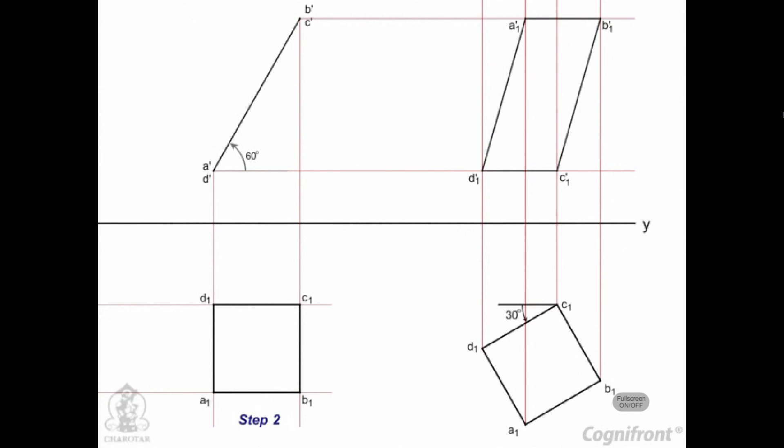Join the lines A dash 1, B dash 1, C dash 1, D dash 1 to obtain the final front view of the given plane surface.